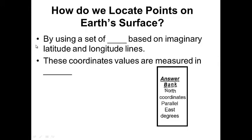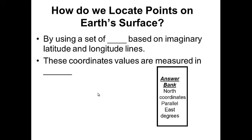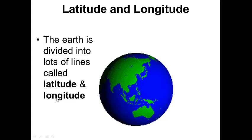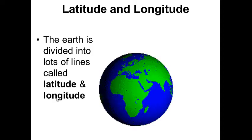For your notes, go ahead and pause this. How do we locate points on Earth's surface, or on maps? Question on the left-hand side, answer on the right-hand side. Use the answer bank to determine which word best completes the sentence. Record these words in your answer bank. I'm going to move on — latitude and longitude: the Earth is divided into lots of lines called latitude and longitude.